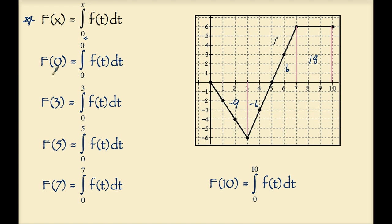So F of 0 would be the area between the curve and the x-axis from 0 to 0. F of 3 would be the area from 0 to 3, etc. Areas below the x-axis will be negative, and those above will be positive. F of 0 means the area from 0 to 0; since we don't move off our starting point, we don't accumulate any area. Therefore, the value of this integral is 0, and F of 0 is 0.